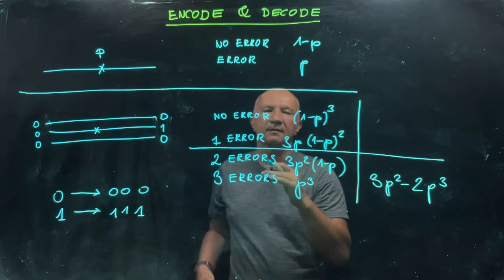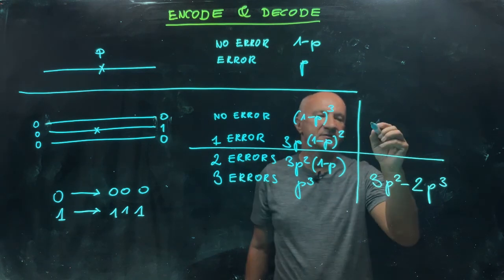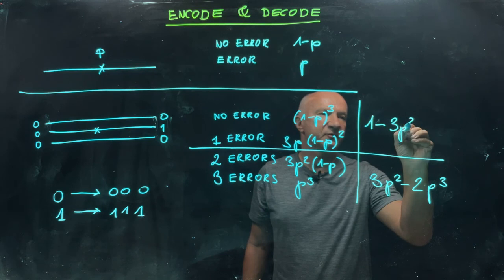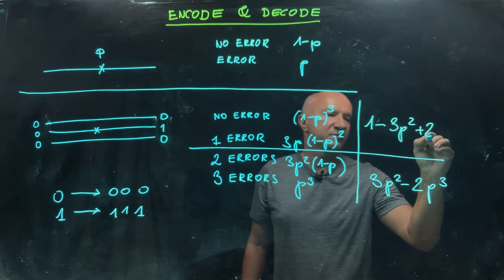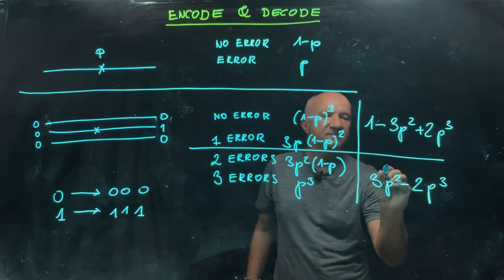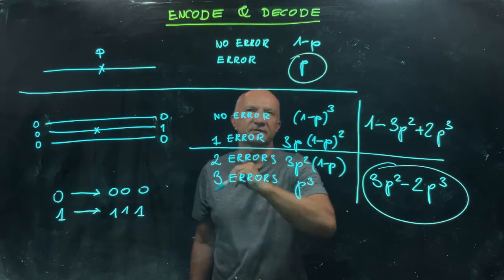We add up those two numbers, and that gives us 3p² - 2p³. The probability that the majority will get us the right value is 1 - 3p² + 2p³. That is your effective error, and we have to compare it with this case.